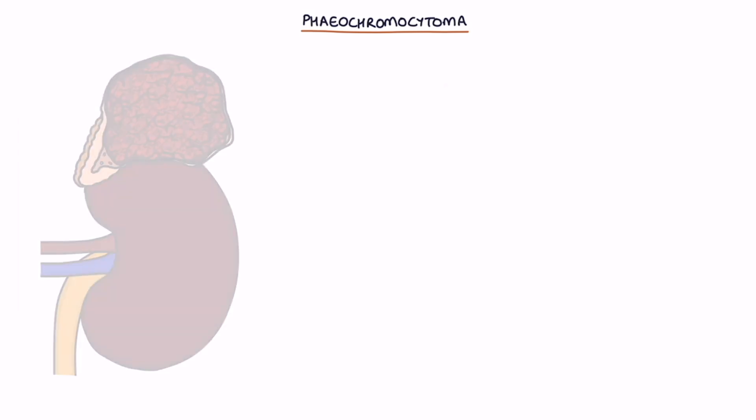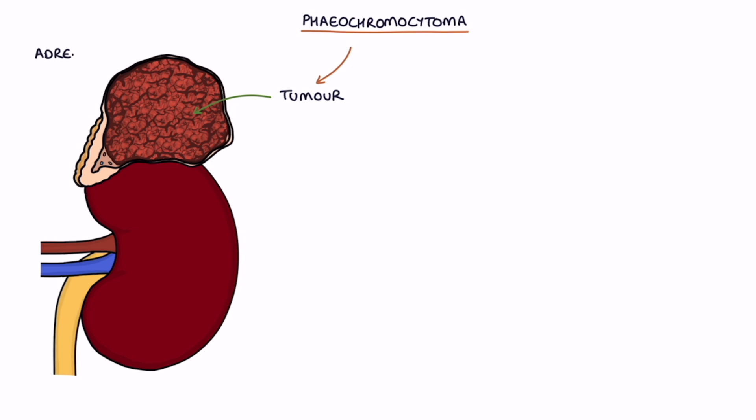A pheochromocytoma is a tumour of the adrenal glands that secretes unregulated and excessive amounts of catecholamines, specifically adrenaline.